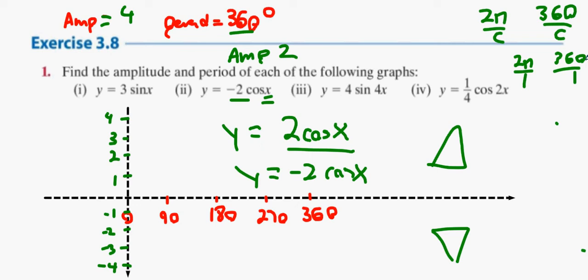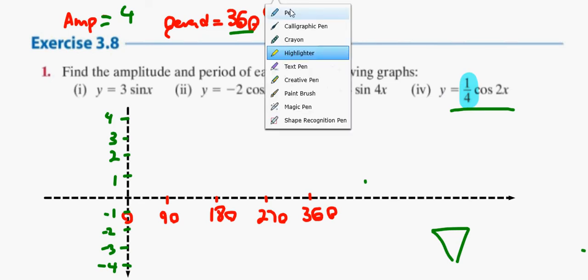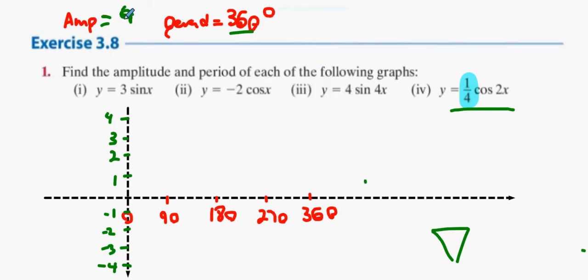Now, what about the last one? A quarter cos 2X. What do we reckon for this one? What's the amplitude, lads? A quarter. Amplitude is 1 quarter. The period, the C value is 2, so it's going to be 2 pi divided by 2 or 360 divided by 2. So what answer? 180 or pi.